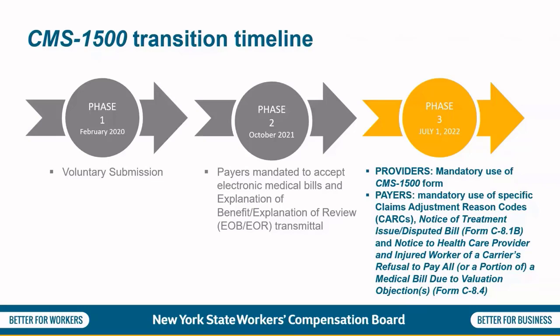Payers must also provide the EOBs electronically to health care providers identifying the same CARC as specified on Form C-8.1-B or Form C-8.4. The new forms will be available to view on the Board's website in July 2022, and while use of them is mandatory, the Board will be extending a grace period through September 19, 2022. The Board determined it would no longer require inclusion of an injured worker's full nine-digit Social Security Number as of June 16, 2021. Instead, only the last four digits of the Social Security Number should be included on the forms.